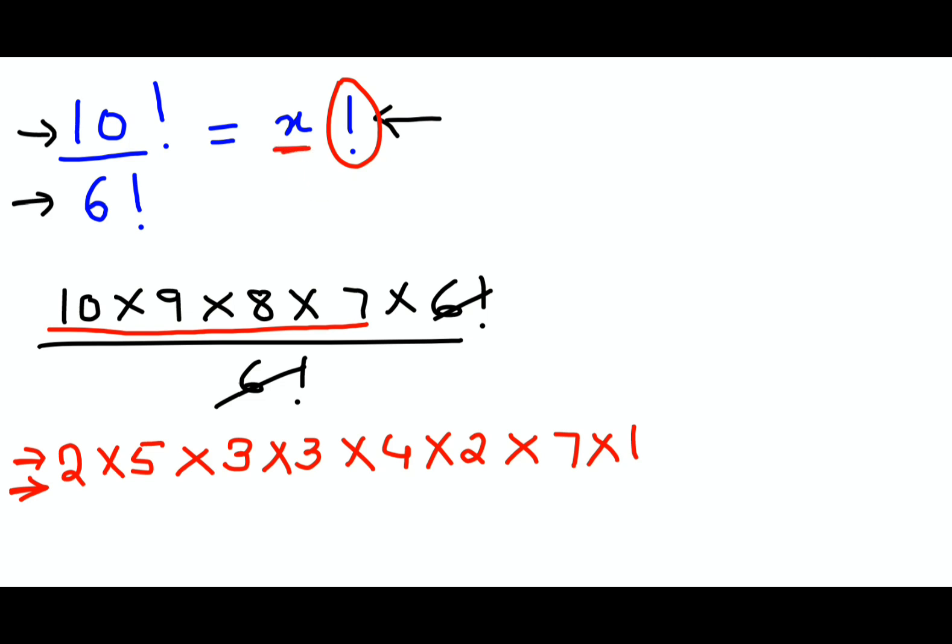So for that let's write everything in its ascending order. We have 1, cancelling 1. Then we have 2, cancelling 2. Then we have 3, cancelling 3. Then we have 4, cancelling 4. Then we have 5, cancelling 5. Then we have 3 into 2 which gets you 6, so I am cancelling 3 and 2. And then I am just left with 7.